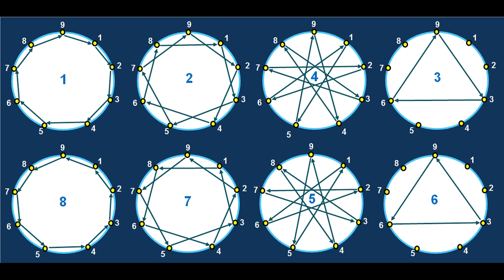And the other thing to take away from this particular visual is that 6 of the numbers, 1, 2, 4, 8, 7, 5, touch all 9 parts of the circle, whereas the 3 and the 6 just make these triangular figures and oscillate between the 3, 6, and 9.